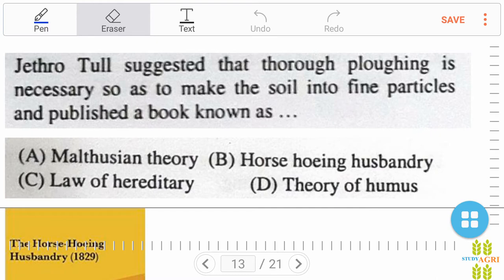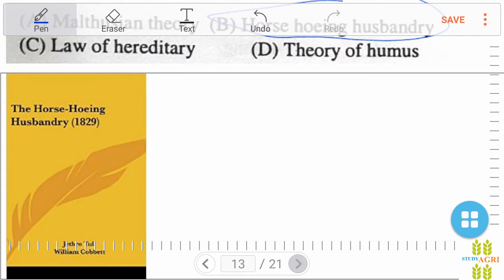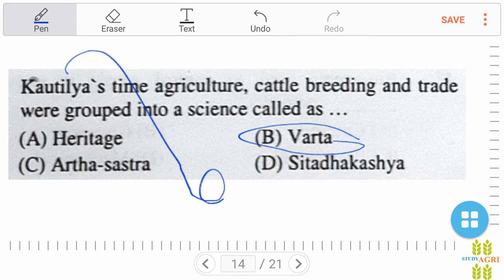Jethro Tull suggested that thorough plowing is necessary so as to make the soil into fine particles, and published a well-known book, Horsehoeing Husbandry, from 1829. Next question: Kautilya's time agriculture, cattle breeding, and trade were grouped into a science called option B, Varta. Kautilya, also known as Vishnu Gupta and Chanakya, was the guru of Chandragupta Maurya. In our case the right answer is option B, Varta.